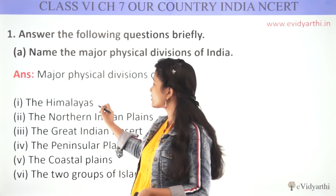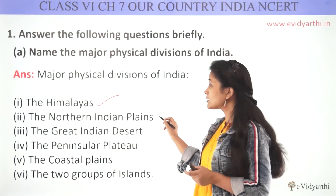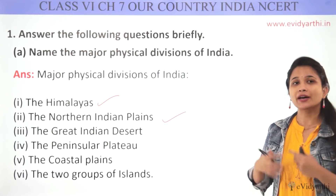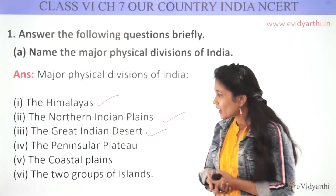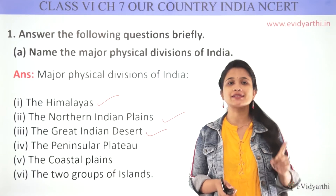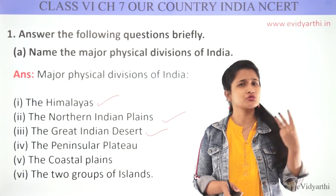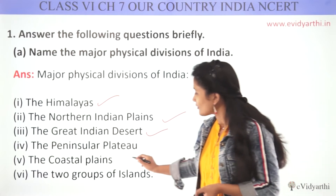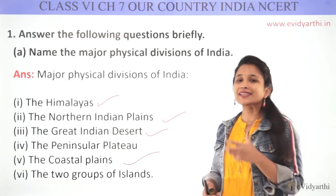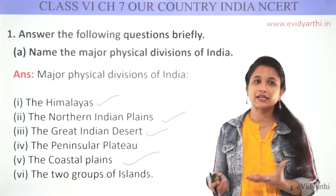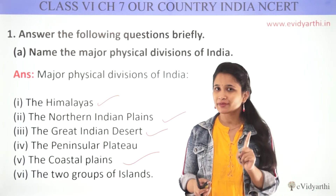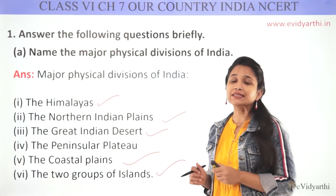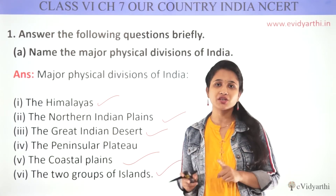The first major physical division is the Himalayas, which are in our north. Second is the Northern Indian Plains, which are south of the Himalayas. Third is the Great Indian Desert. Fourth, we have the Peninsular Plateau, which includes the Deccan Plateau, Malwa Plateau, and Chota Nagpur Plateau. Fifth are the Coastal Plains. And sixth, we have two island groups: Andaman and Nicobar, and Lakshadweep. These are the six major physical divisions of India.